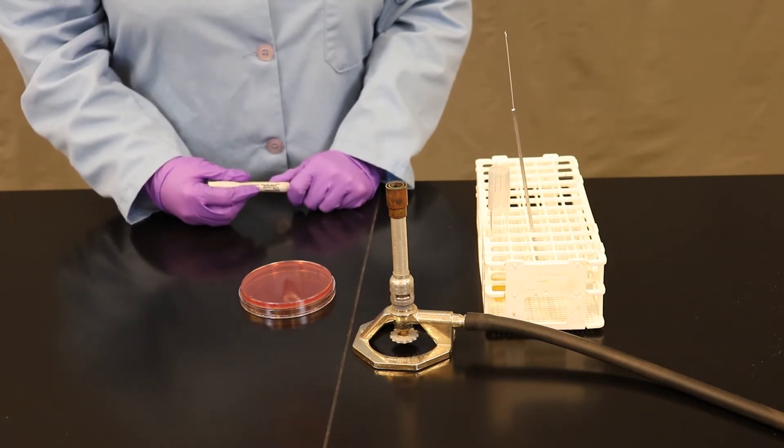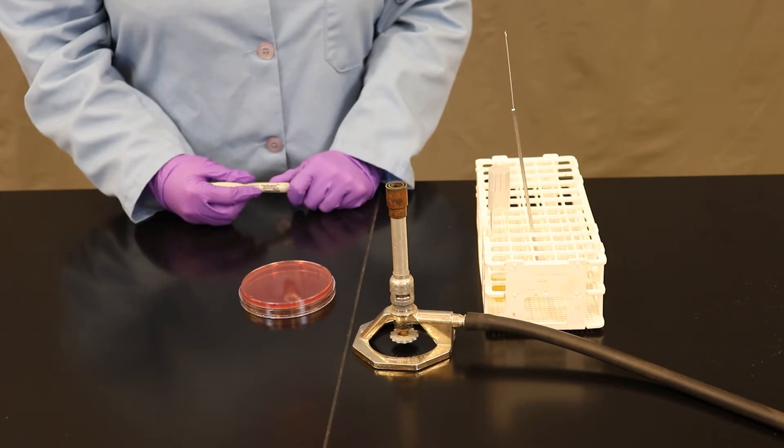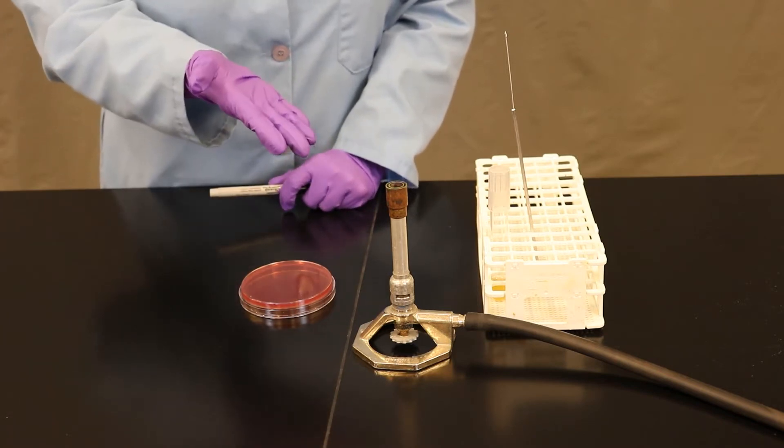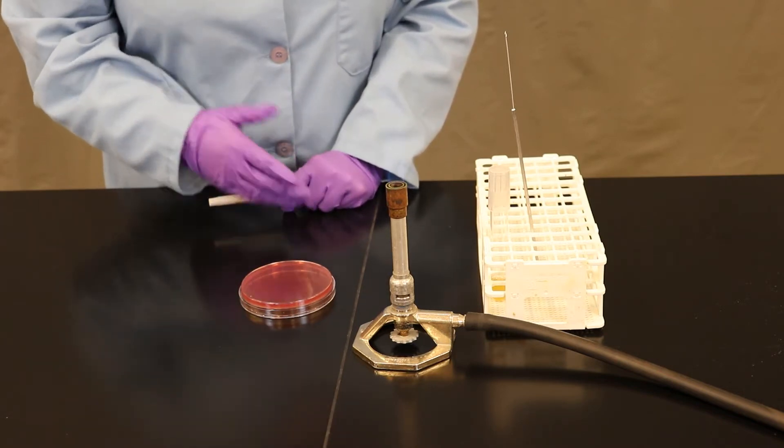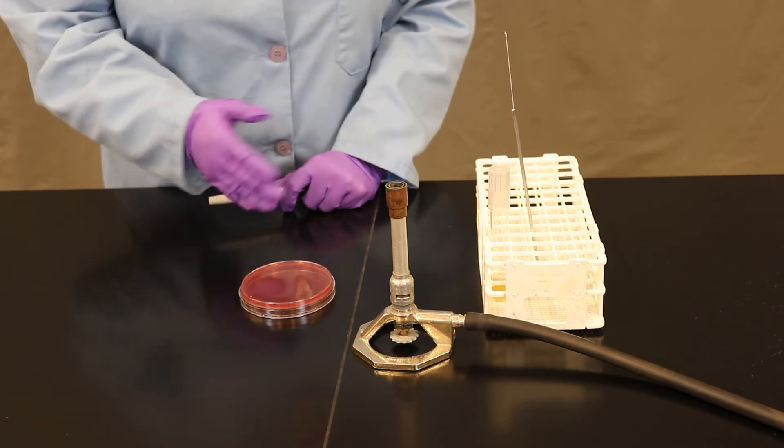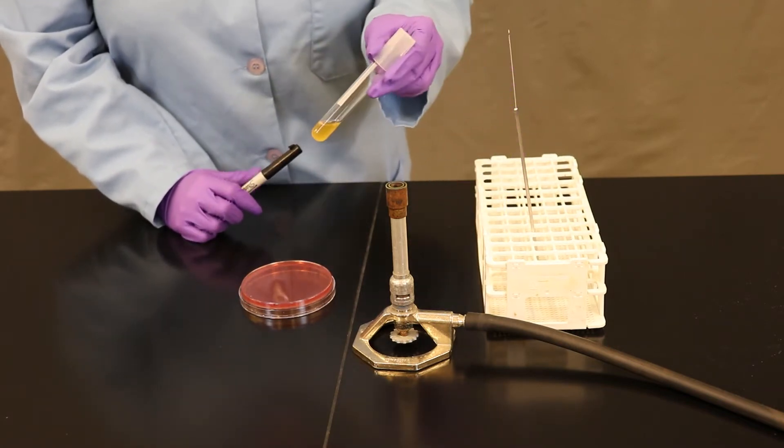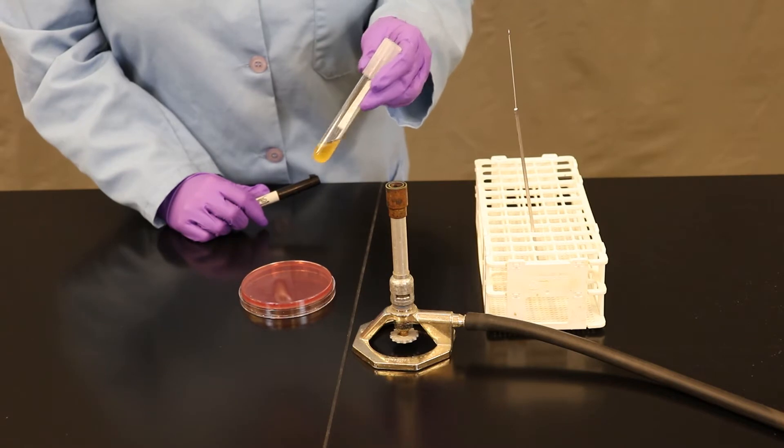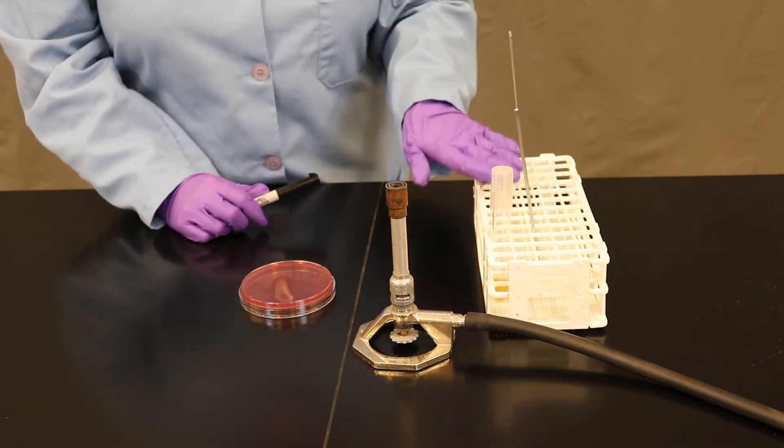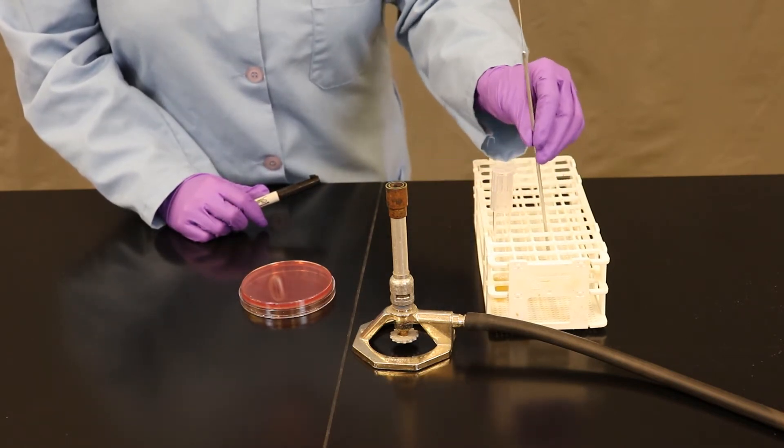Before you begin, you want to make sure you have all your supplies ready to go. We have our Bunsen burner lit and ready, a petri plate that we're going to inoculate. We're going to work today with a mixed culture of bacteria in a broth, a rack, and our inoculating loop.